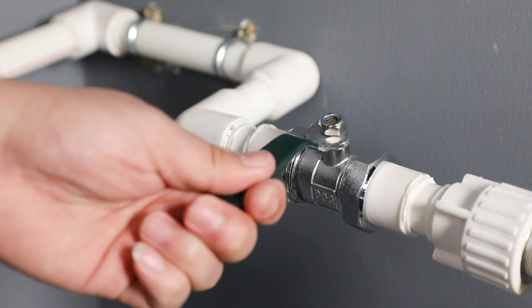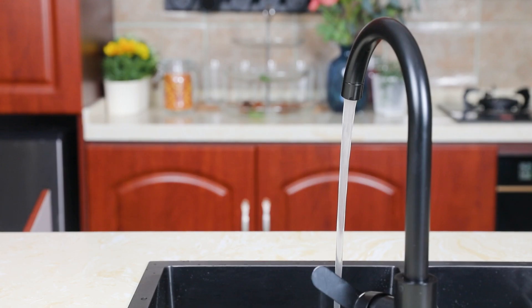First, turn off the main water line and open the faucet to drain out all the remaining water from the pipe and to release the pressure.